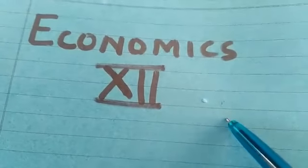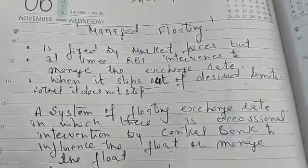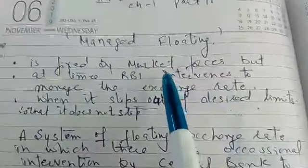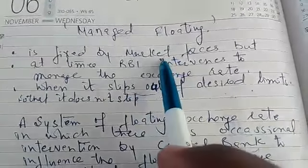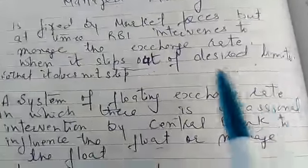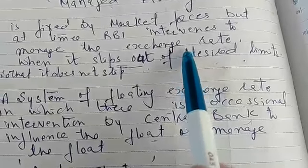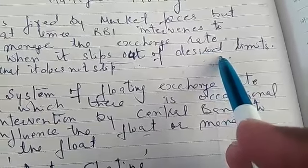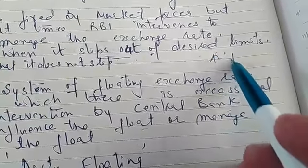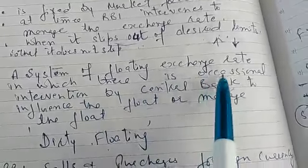Hello 12th class, today we are dealing with the last subtopics — there are two topics of your first chapter of Unit 5. What we are dealing with is managed floating, also known as dirty floating. The foreign exchange rate is fixed by market forces, but at times the RBI — or central banks of any country — intervenes. This is a system of floating exchange rate with occasional central bank intervention.